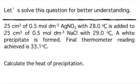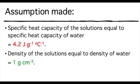Now let's look at this question — we will use it to work through our calculations for delta H for your better understanding. Before we proceed, there are two assumptions to remember. Number one: specific heat capacity of the solution is always 4.2 J g⁻¹ °C⁻¹. Number two: the density of the solution equals that of water, which is 1 g/cm³.